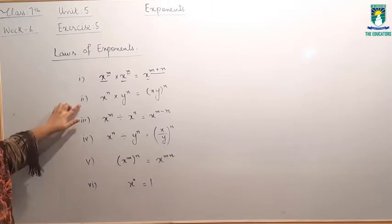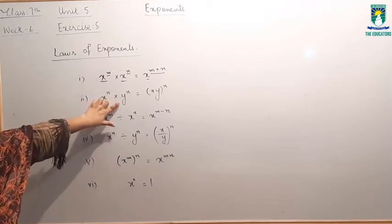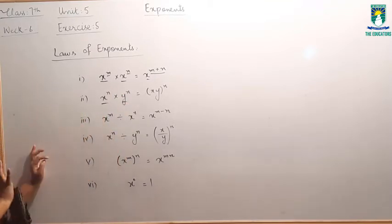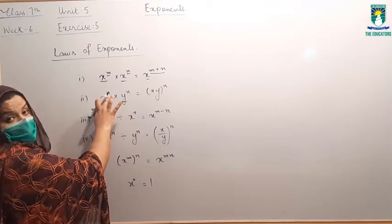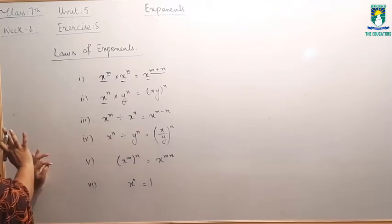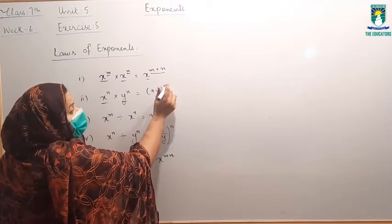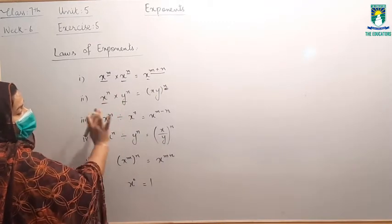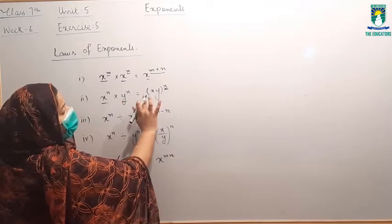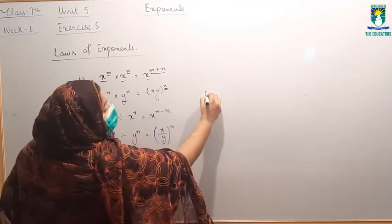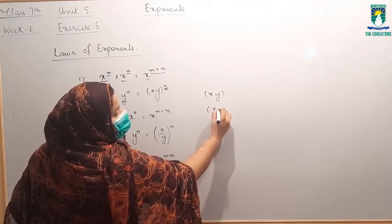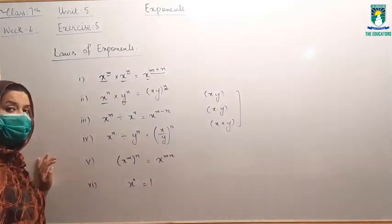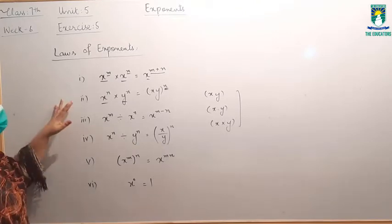Second law: x raised to power n multiplied by y raised to power n. अब आपके पास bases change हैं — यहाँ base x है और यहाँ base y है — लेकिन exponent दोनों का n है. आप इनको एक साथ एक exponent के साथ write कर सकते हैं. It will be equal to xy whole raised to power n. आप xy को x dot y या x cross y लिख सकते हैं, these are the same thing.